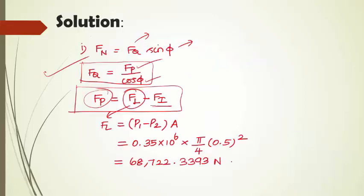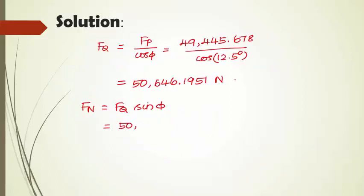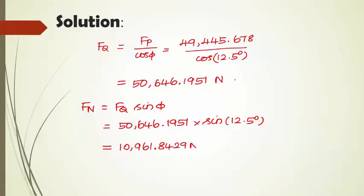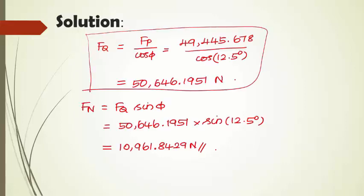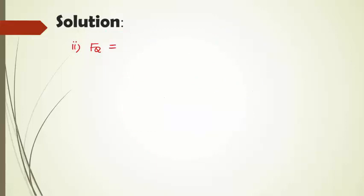Now we can calculate Fn as Fq times sin(phi). Fq is 50,646.1951 newton and phi is 12.5 degrees. So the value of Fn, that is the pressure acting on the side bars, is obtained as 10,961.8429 newton. This is the answer for the first subdivision. For the second subdivision, the thrust in the connecting rod Fq has already been calculated as 50,646.1951 newton.